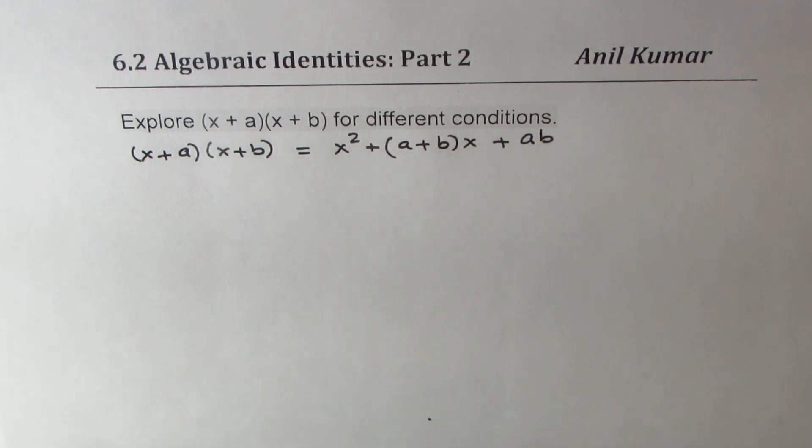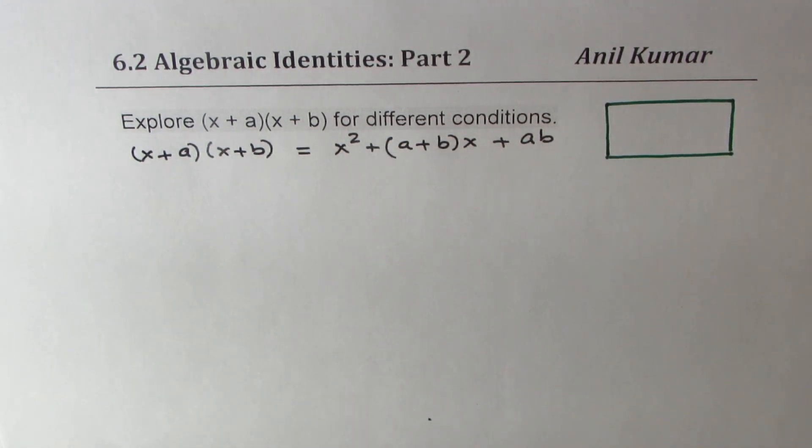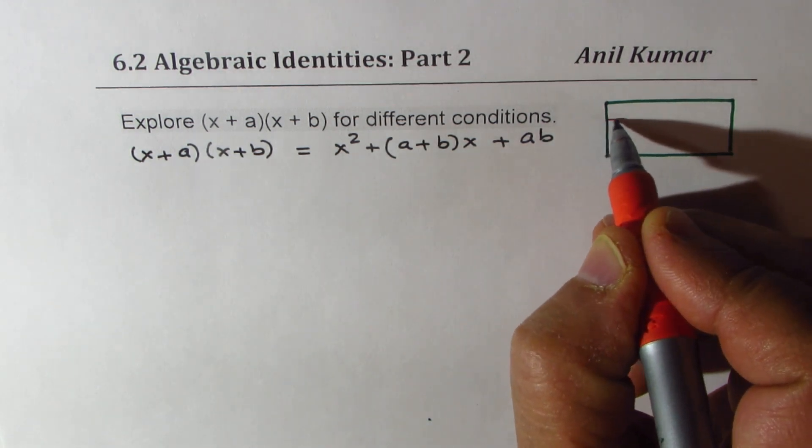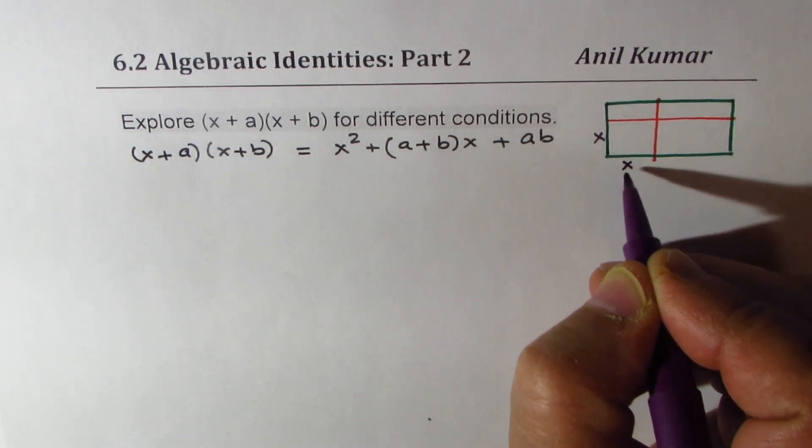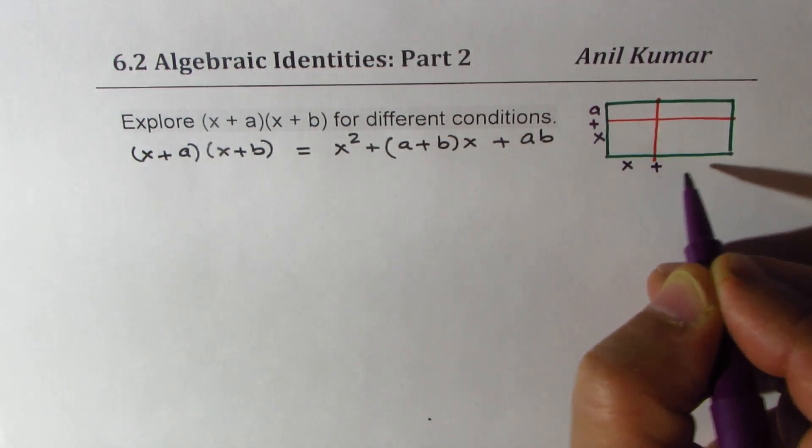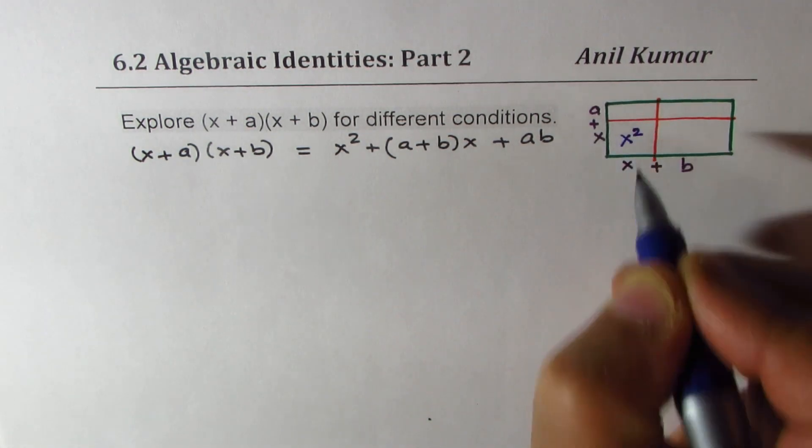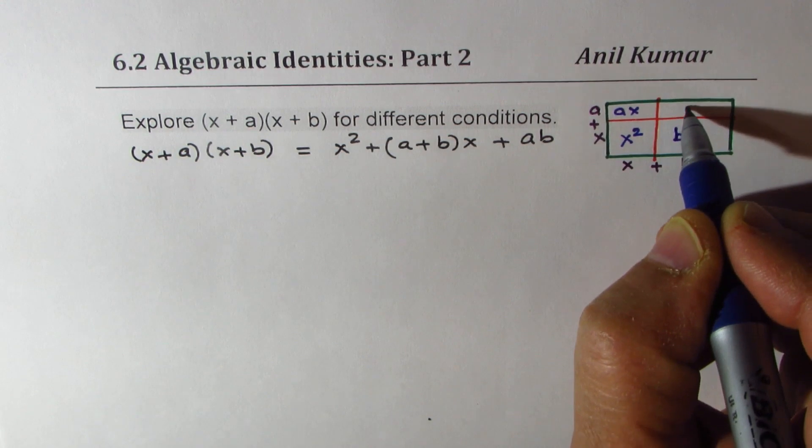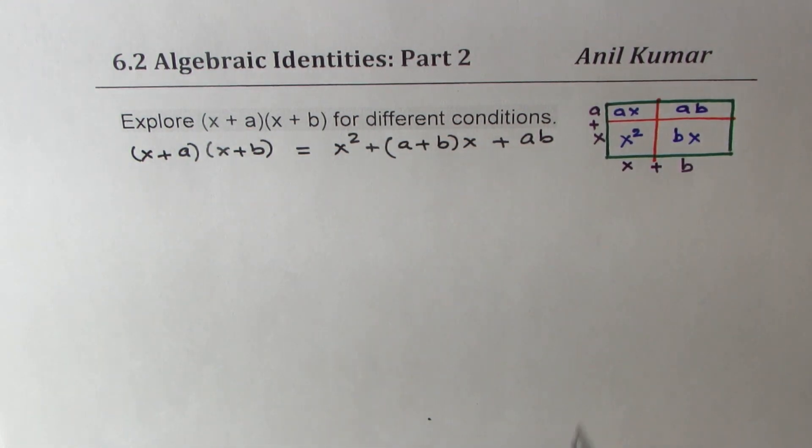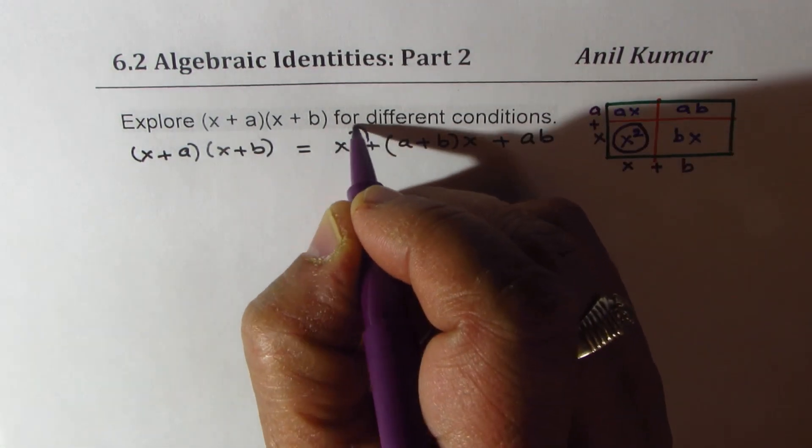We also learned that we can always model this in form of an area of a rectangle. So if I have a rectangle whose sides are x plus a and x plus b, the area splits into portions like x times x being x squared, x times a means ax, and here b times x and a times b. So you could actually see from here that we have a square here, x squared, which is right there.